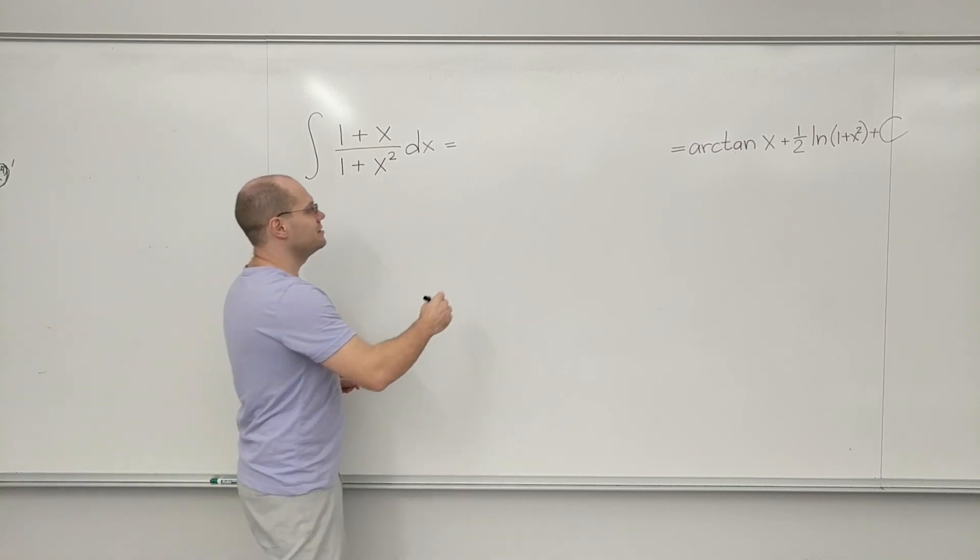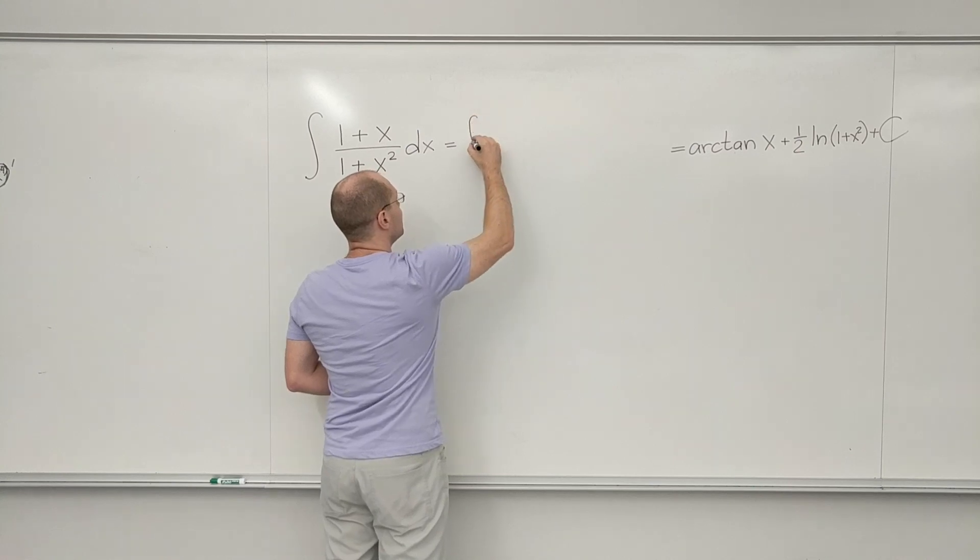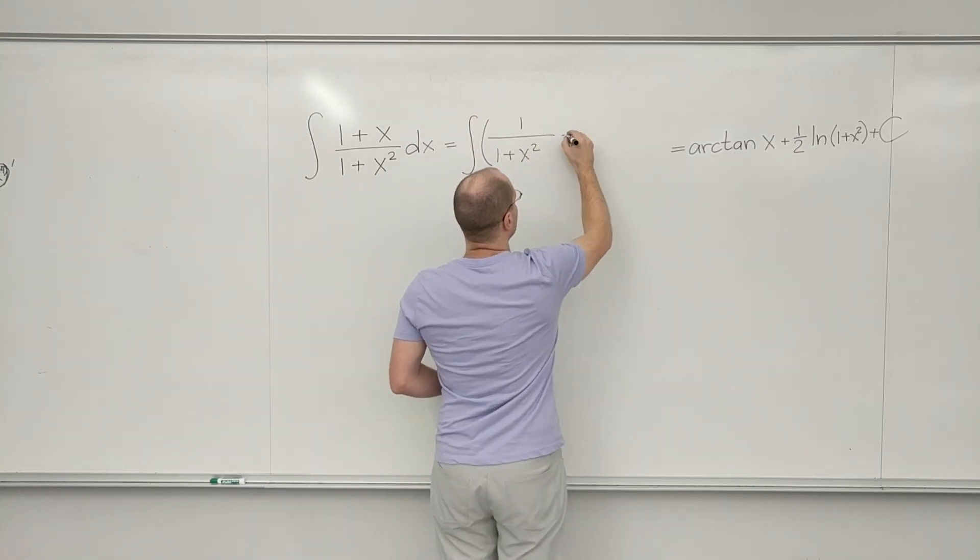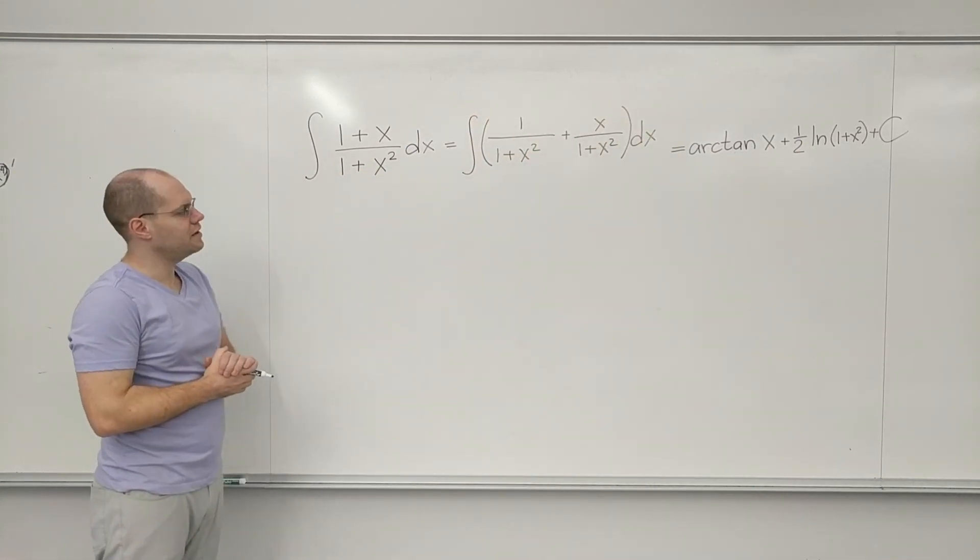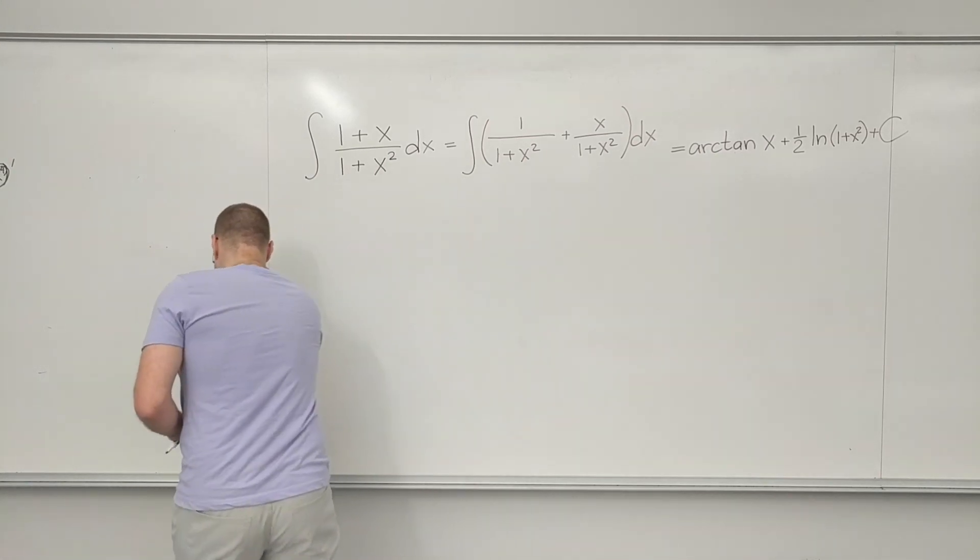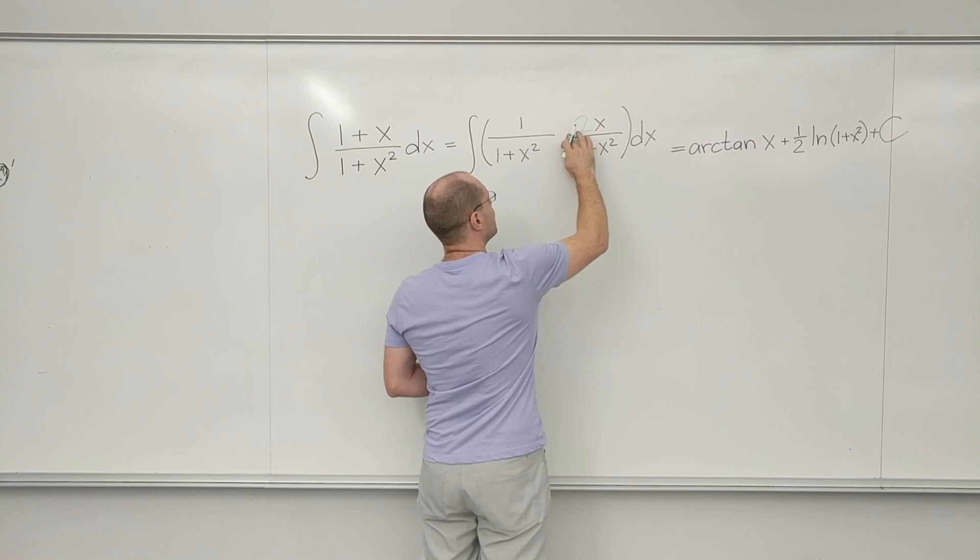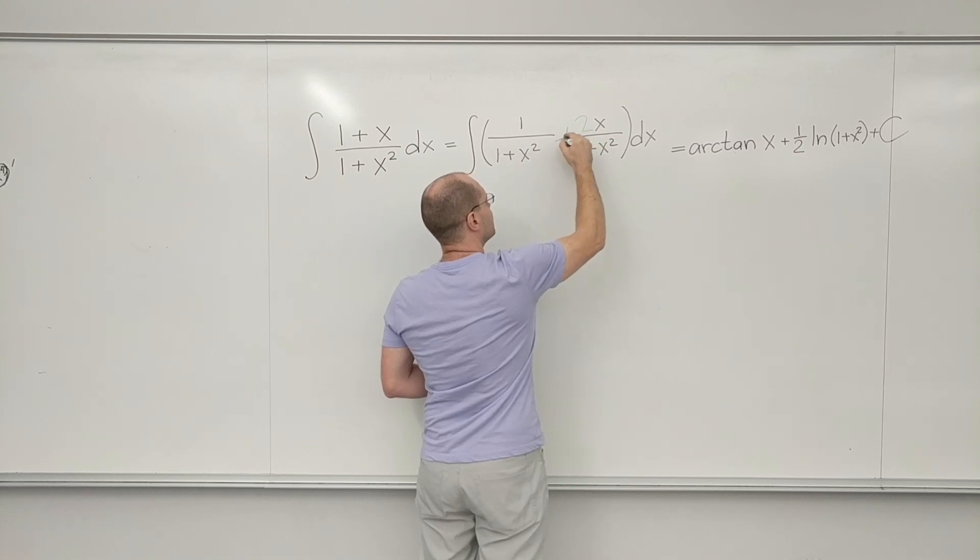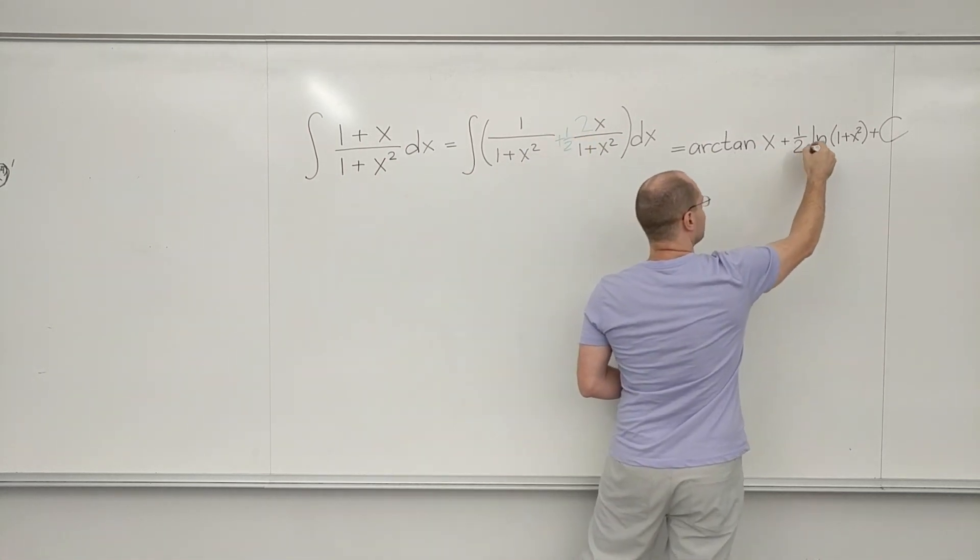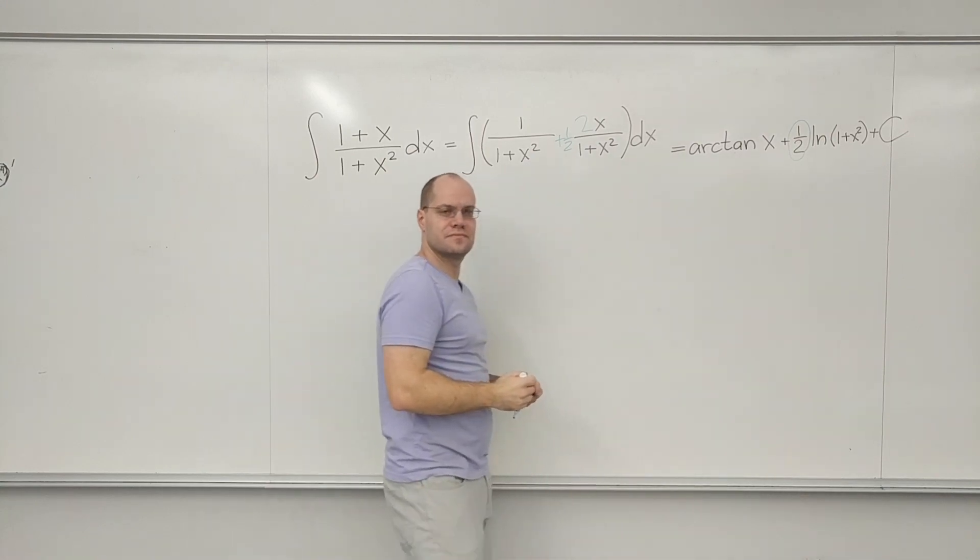But just for the record, the intermediate step that we skipped. And then here is where I would throw in a factor of 2 and make up for it with a 1 half, which eventually ends up right here. Okay, all right. Thank you.